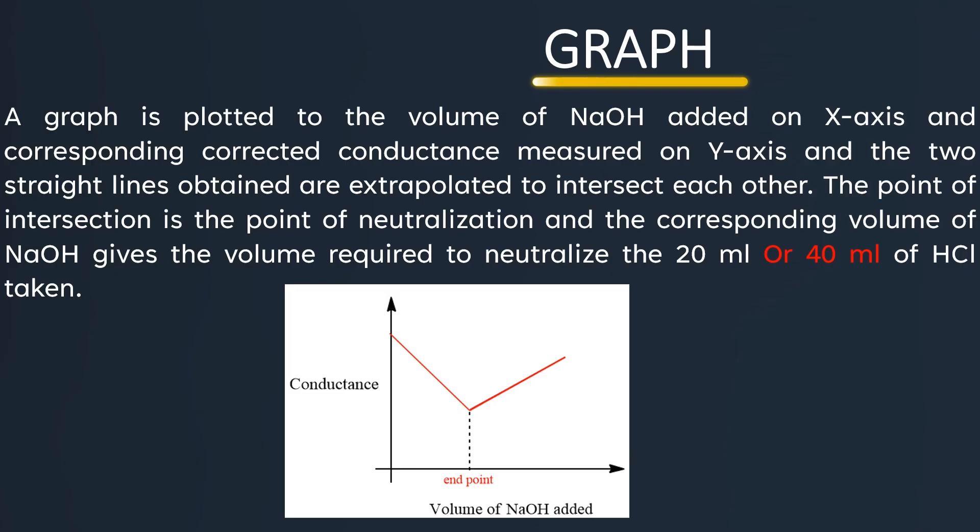A graph is plotted with the volume of NaOH added on the x-axis and corresponding corrected conductance measured on the y-axis. The two straight lines obtained are extrapolated to intersect each other. The point of intersection is the point of neutralization, and the corresponding volume of NaOH gives the volume required to neutralize the 40 ml of HCl taken. This is a model graph of conductance with respect to volume of NaOH added, giving an end point as shown in the figure.